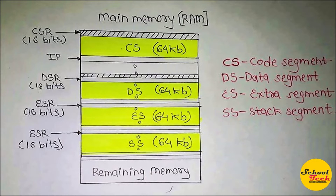The Extra Segment is similar to the Data Segment but is only required to store the destination block with multiple values — it is a 64-kilobyte segment. The Stack Segment is a 64-kilobyte segment used in interrupts and to store return addresses.